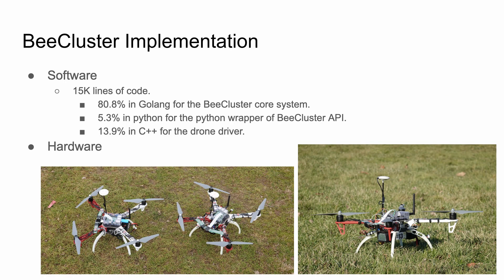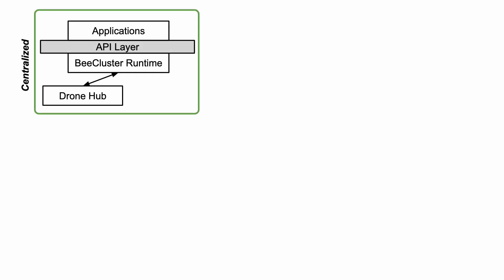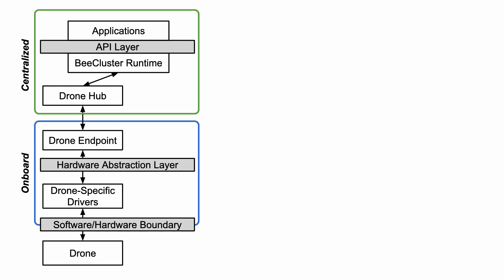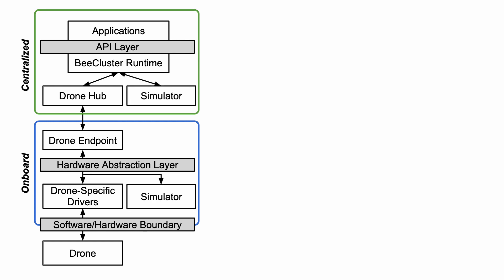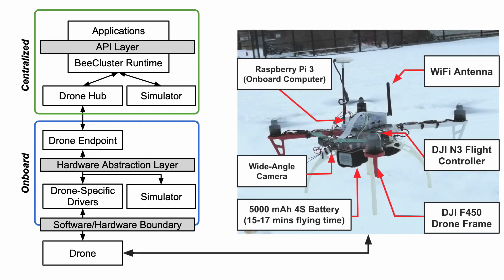We implemented B-Cluster and evaluated it on real drones. The software stack consists of two parts. One is the code running in a centralized server, which includes the application code and the B-Cluster runtime. The other part is the code running on each physical drone. These two parts communicate through a wireless link. We implemented two simulators to help verify the correctness of the code. We assembled a drone using a DJI F450 drone frame and the DJI Naza-M Swift flight controller. We used Raspberry Pi as the onboard computer. The drone has about 15 to 17 minutes of flying time.